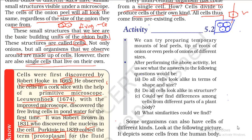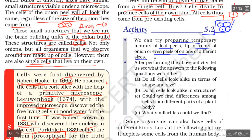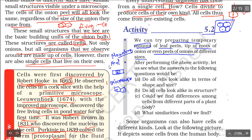Today we continue the chapter 'The Fundamental Unit of Life' with Activity 5.2. We can try preparing temporary mounts of leaf peels, tip of roots of onion, or peels of onion of different sizes. A mount is the process we did in the previous video - we took an onion peel, placed a small piece of epidermis on a slide, covered it with a cover slip, and observed it under the microscope. This process is called mounting.